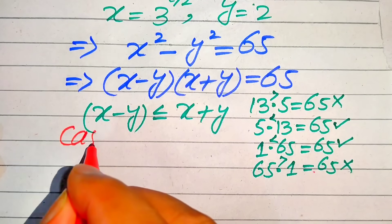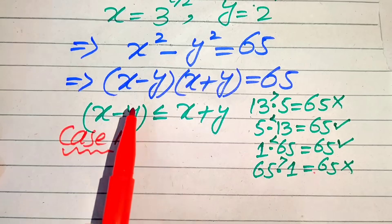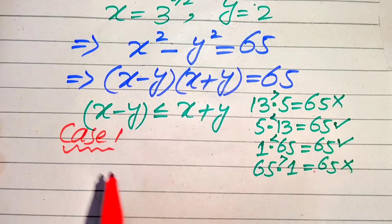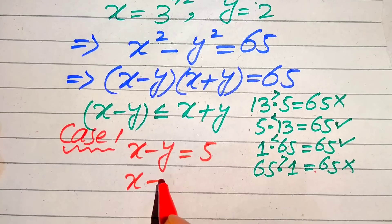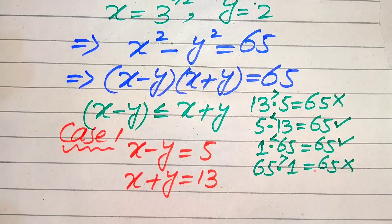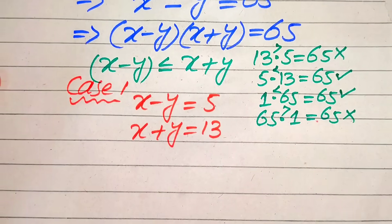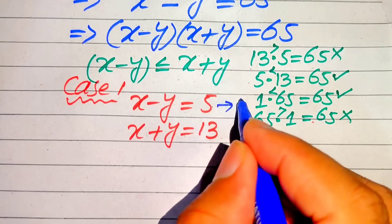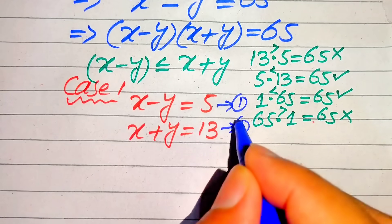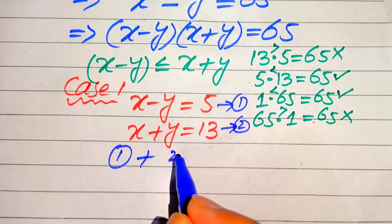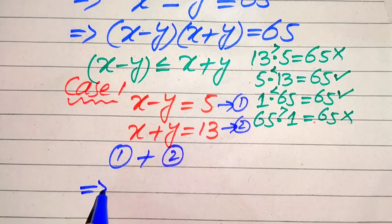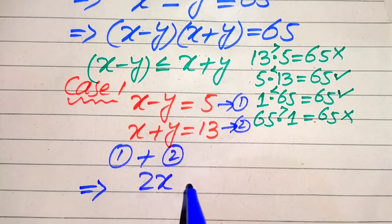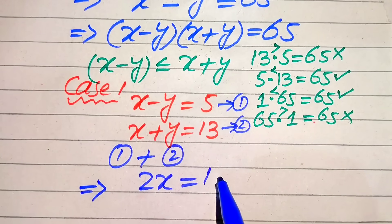In Case 1, we compare the two factors with these values: x minus y equals 5 (equation 1) and x plus y equals 13 (equation 2). Adding equation 1 and equation 2, the y terms cancel out, and we get 2x equals 18.